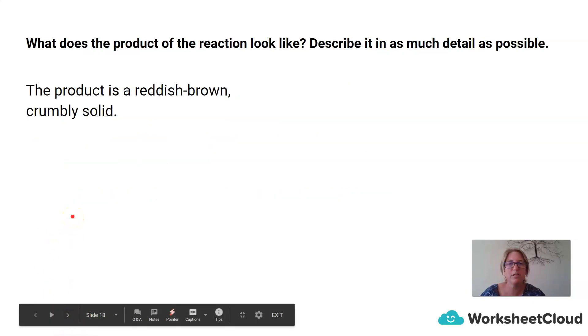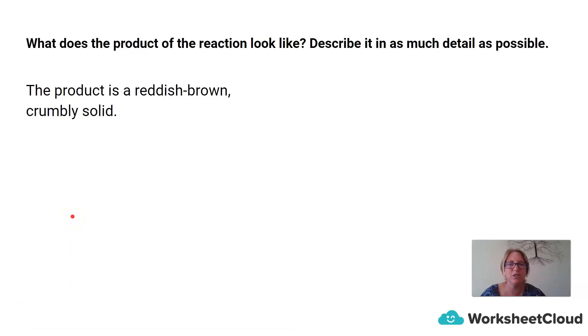So what does the product of the reaction look like? Describe it as much as possible. So basically, the product is a reddish browny crumbly solid. So actual facts similar to the rust that we saw in the car at the beginning of the lesson.